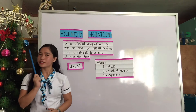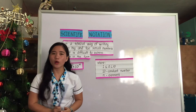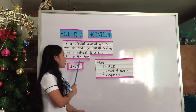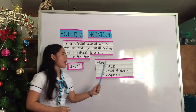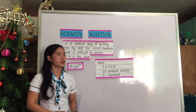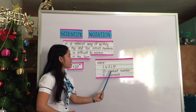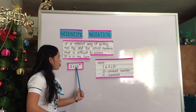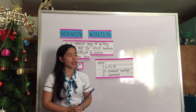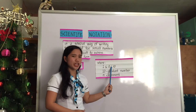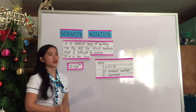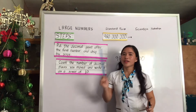Scientific notation is in the form of a times 10 to the power of n, where a is greater than or equal to 1 but less than 10, and 10 is the constant number, and n is the exponent. So your a should be ranging from 1 to 9. Get it?